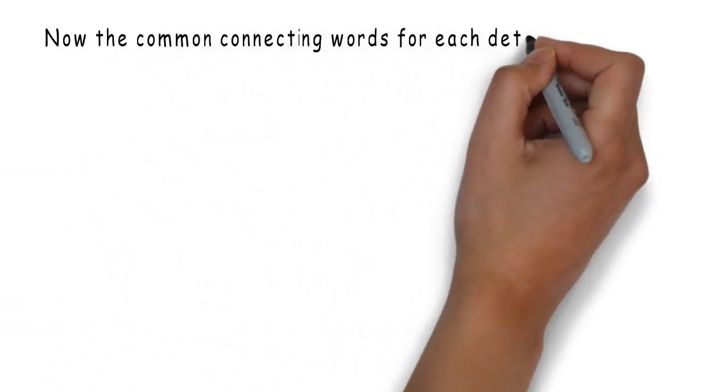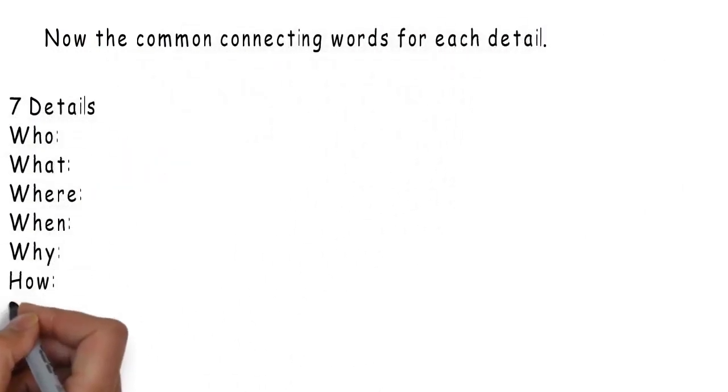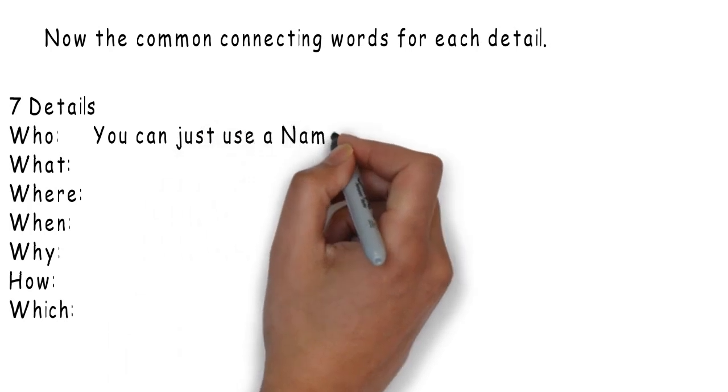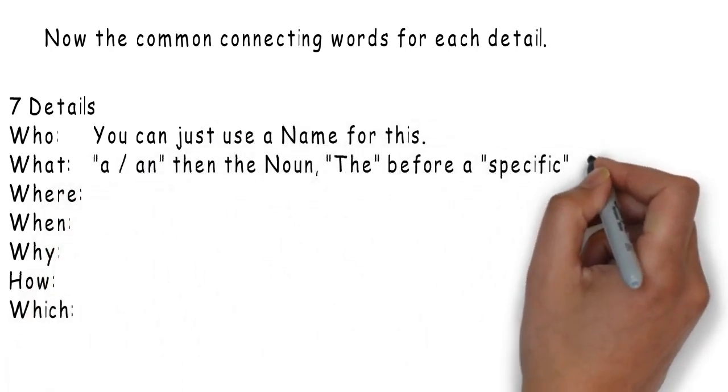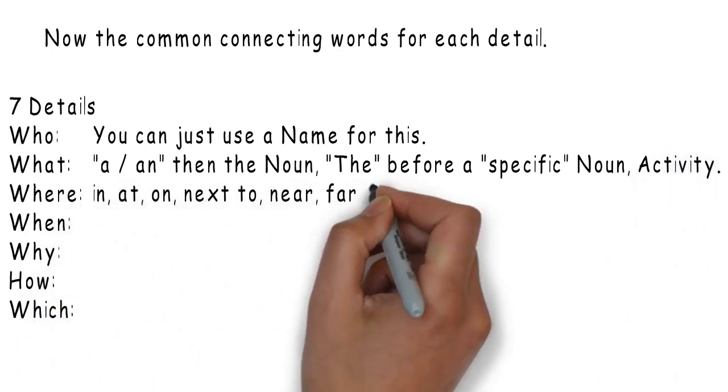Now, the common connecting words for each detail. Here are the seven details. Who – you can just use a name for this. What – a, an, then the noun. The – before a specific noun or an activity.